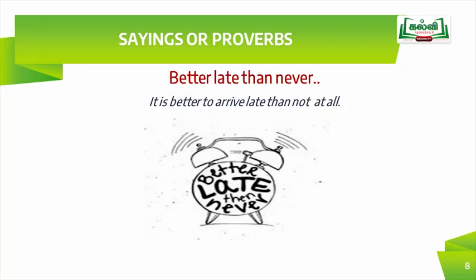Let's move to the next type: sayings or proverbs. Look at the example: 'better late than never.' The meaning is it is better to arrive late than not to arrive at all. We also have another type of idiom — fixed phrases with the keywords 'and' or 'or.'